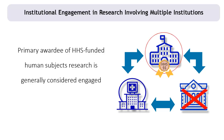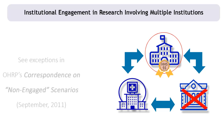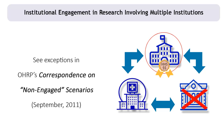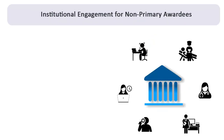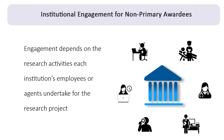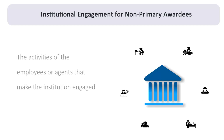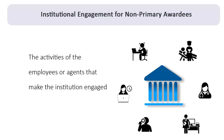There are a few exceptions to this general position that the primary awardee is considered engaged. These exceptions are discussed in OHRP's correspondence on non-engaged scenarios from September 22, 2011, which can be found on our website. With regard to the other participating institutions — those that are not the primary awardee — whether they are engaged depends on the actual research activities that each institution's employees or agents undertake. While institutions, not individuals, are considered to be engaged, it is the activities of the institution's employees or agents that make an institution engaged.